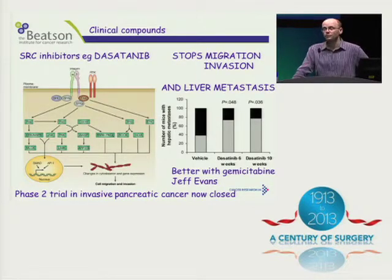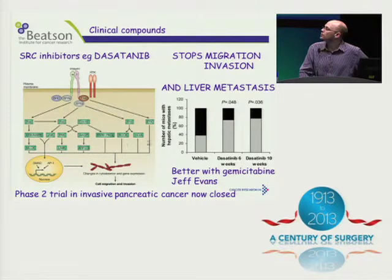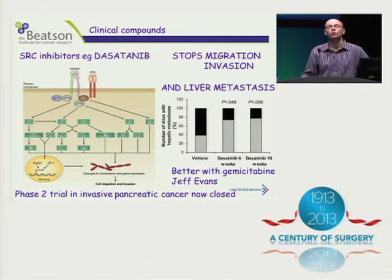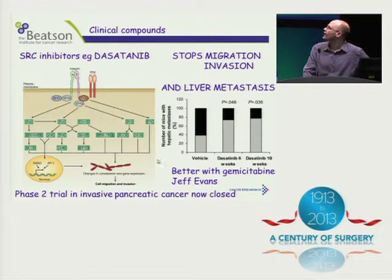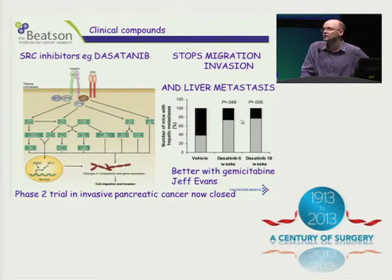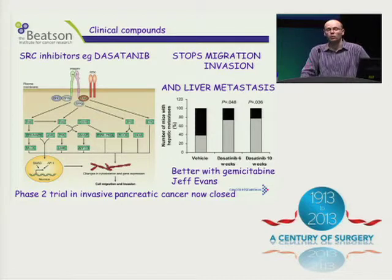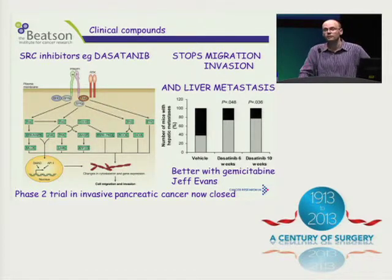Just to finish, some work led by Jeff Evans in Glasgow has been looking at the role of SRC inhibitors in this model and also in the disease. SRC family kinase is downstream of the integrins and therefore seems to be very important for the invasion and metastasis process. We can use these inhibitors in vitro to stop migration and invasion. Moving into these mouse models using dasatinib — a potent SRC inhibitor and also an Abl kinase inhibitor — we can very strongly block metastatic spread. This seems to be better when combined with gemcitabine. Jeff is currently coordinating a phase two trial to see whether dasatinib gives benefit in pancreatic cancers that are locally invasive but not metastatic.